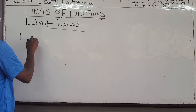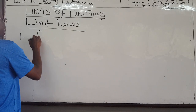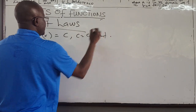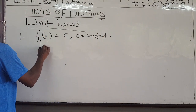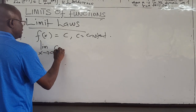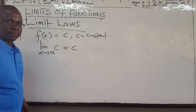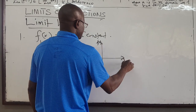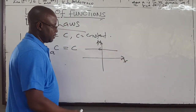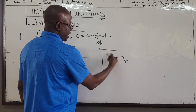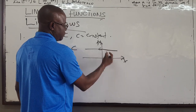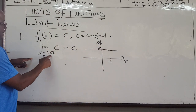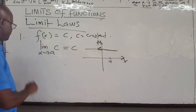The easiest one is if the function is a constant. If f(x) = c where c is a constant, then the limit as x approaches a of c is just c — it doesn't change. The function is not changing; f(x) is the constant c. From the left hand side or the right hand side, the function is going to be the same number c. So: the limit as x approaches a of c equals c.